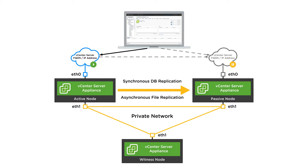This is a three-node architecture that we've introduced that is only available for the vCenter server appliance in vSphere 6.5. It consists of an active, passive, and a witness node. These nodes are cloned from the original vCenter and can be deployed non-disruptively.